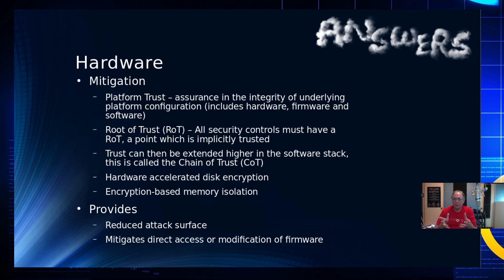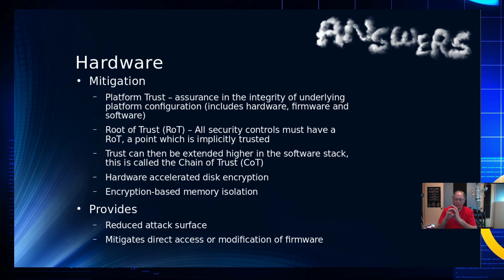Hardware-accelerated disk encryption is another way to mitigate — that's data at rest. We also have offerings today which encrypt the memory, providing isolation and giving us one more area to mitigate. What you're doing here is encrypting the disk, which reduces the exposed data pool. Then with memory encryption, the only data exposed is that which is currently being operated on, really reducing the amount of data available for exfiltration. We're trying to reduce the attack surface and mitigate direct access or modification of firmware — and if it has been modified, we can detect it.